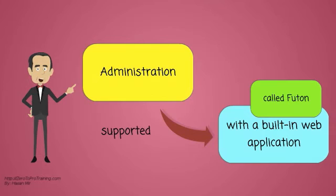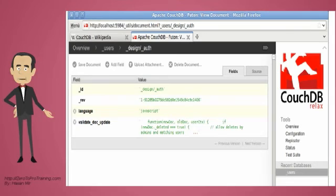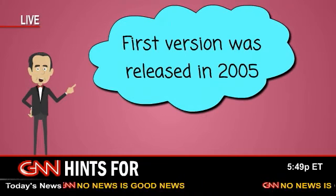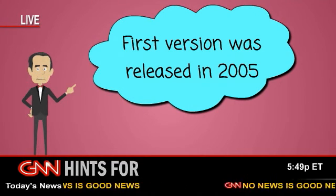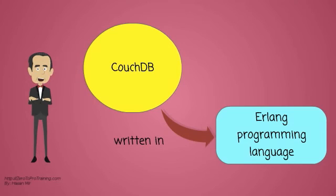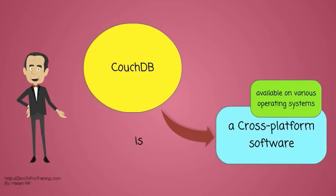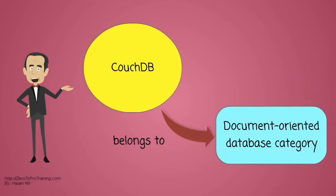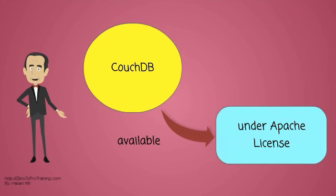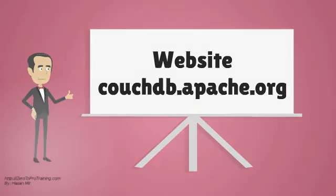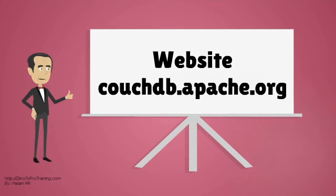Administration is supported with a built-in web application called Futon. Here is a screenshot of Futon, the web-based administration application. The first version was released in 2005. The software is written in the Erlang programming language. It is cross-platform software available on various operating systems. It belongs to a database category called Document-Oriented Database, and is available under the Apache license. The official website is couchdb.apache.org.